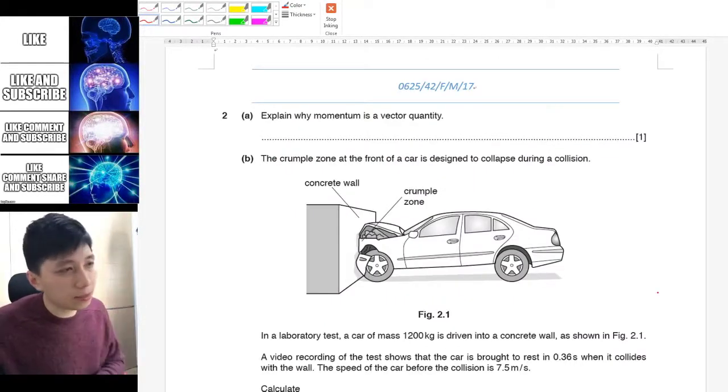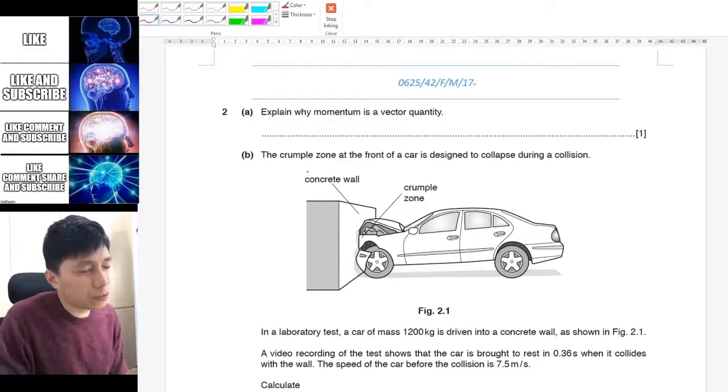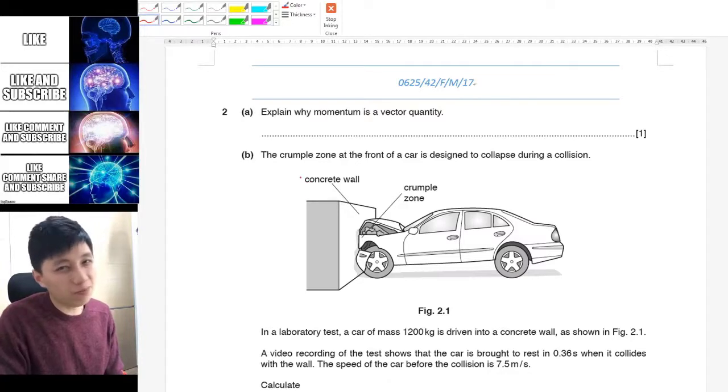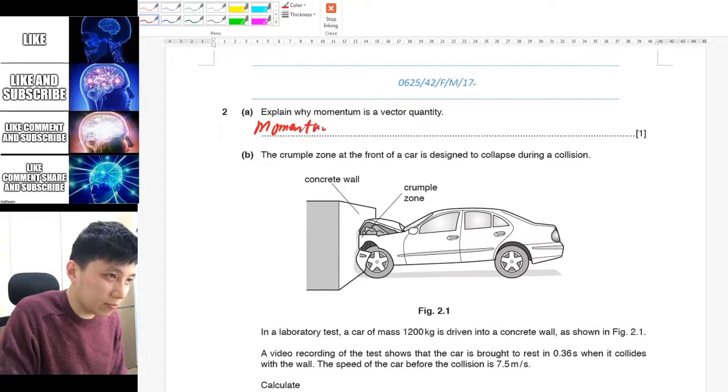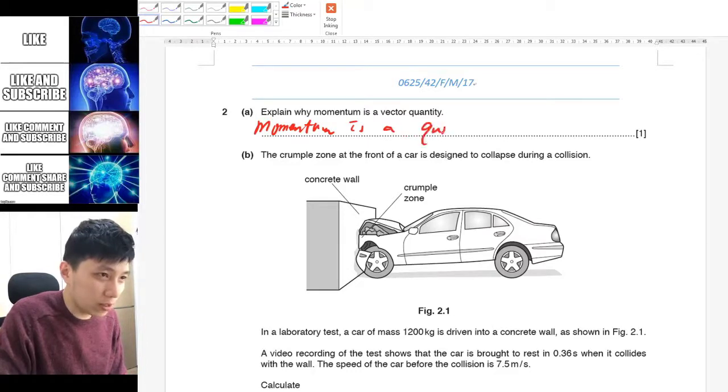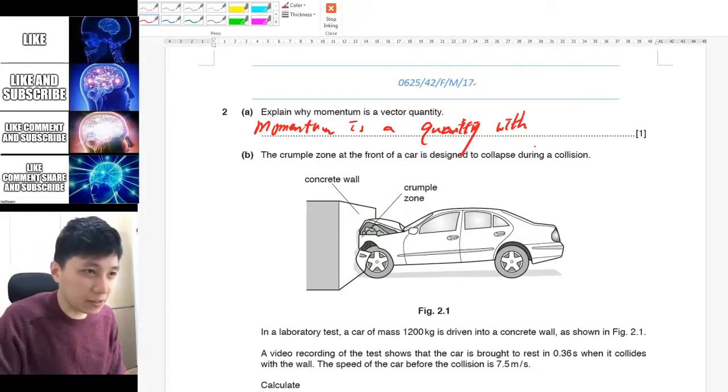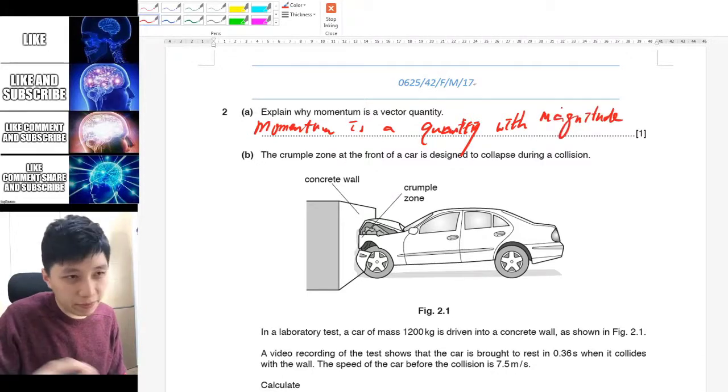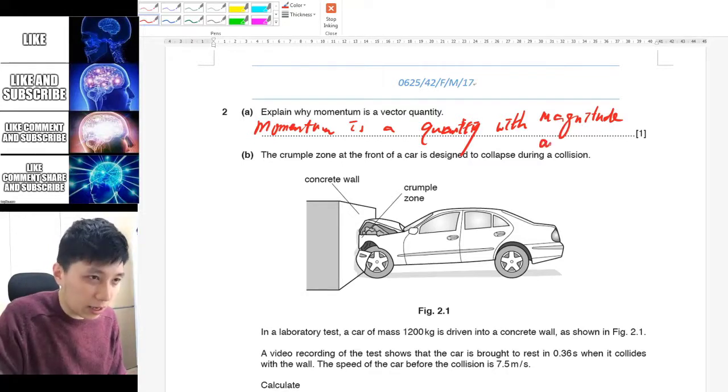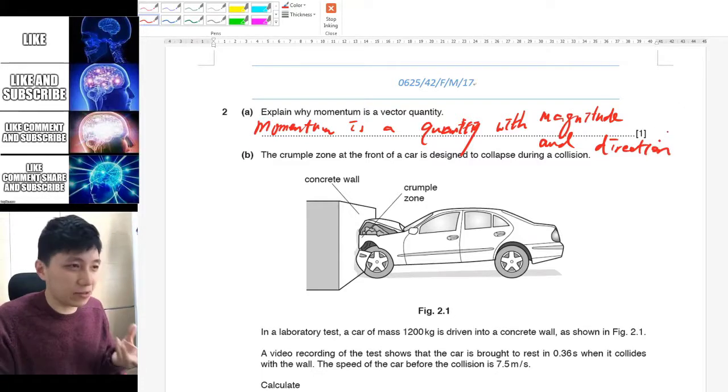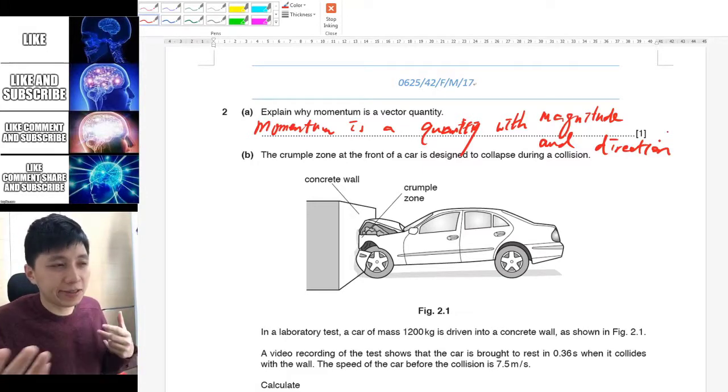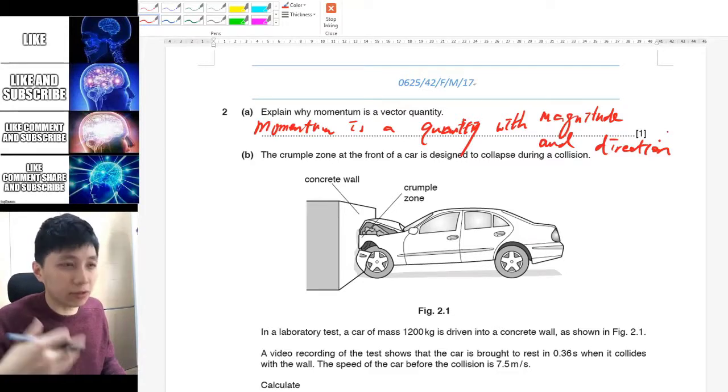Alright so here is a second past paper question on momentum. Please pause the video and try it yourself. Alright the first question is asking you why momentum is a vector. In fact it's pretty much definition so it's not really explaining. So what we can say about it is momentum is a physical quantity with magnitude and direction. If this is really an exam and if I have time I may come back to say we have to consider its direction so that momentum can be conserved. But if I just did it at the first place then this is something that I will put down.